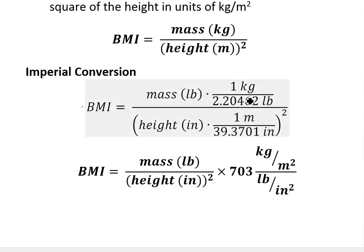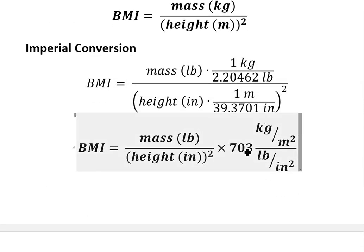Plug this into the calculator, you'll get a ratio of 703. So you could use the imperial pounds and inches, and just multiply by 703 to get kilograms per meter squared.